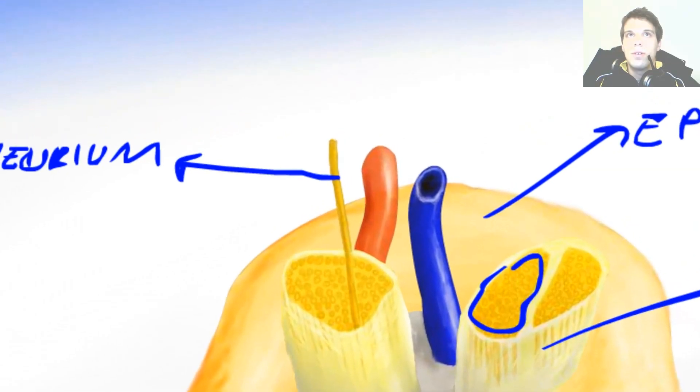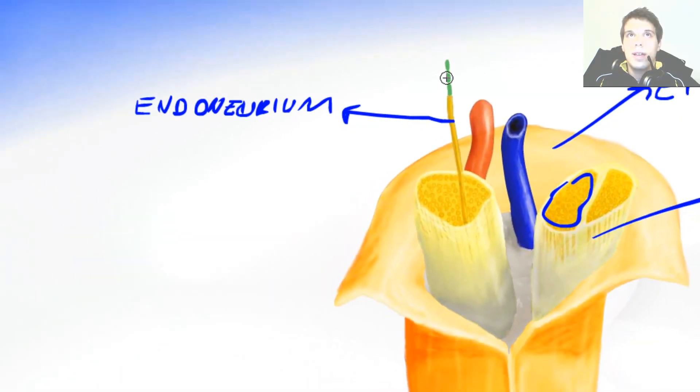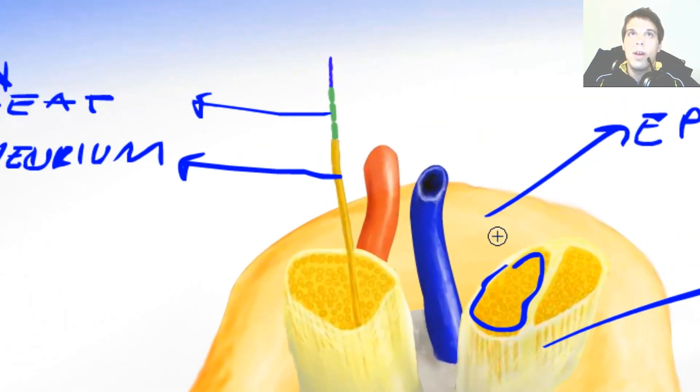Now inside of endoneurium there is myelin sheath. The myelin sheath encloses the axon itself. It increases the electrical resistance of axon and that way the axon can conduct signal faster. So this over here inside of myelin sheath is the axon.